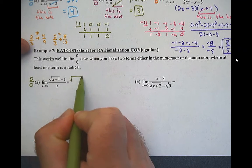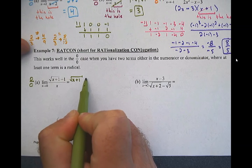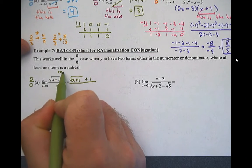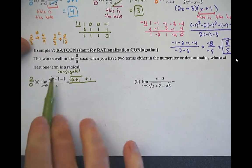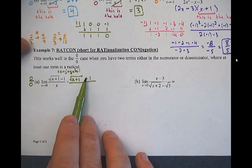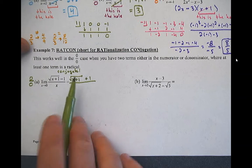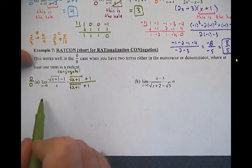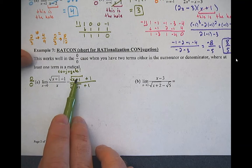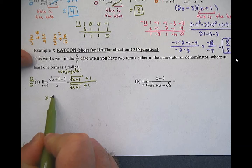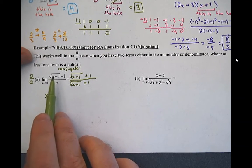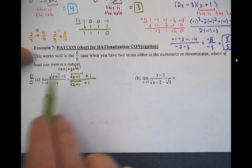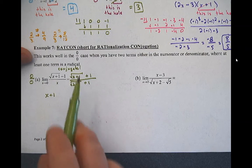The way we get around it is the move called the conjugate. I take the part with the root and leave everything the same except for the sign in the middle — so the minus becomes a plus. Anytime you multiply the top of a fraction, you have to multiply the bottom by the same thing. Distributing, I get root(x+1) times root(x+1), which becomes x+1. Then root(x+1) times one and negative one times root(x+1) cancel out, leaving negative one times one, which is negative one.